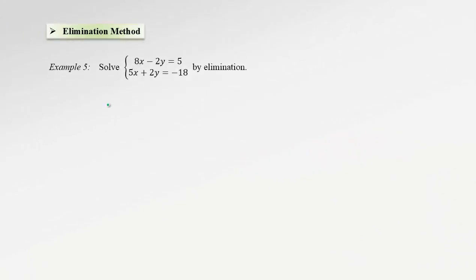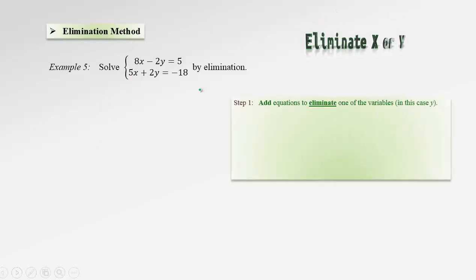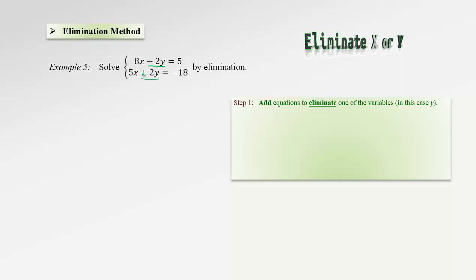Now let's talk about the second algebraic method: the elimination method. The idea is to eliminate x or y — eliminate one of the variables. If we look at this system of equations, we can observe something special. Particularly, the term 2y in one equation is added, and in the other it is subtracted. What will happen if we add these two equations side by side?